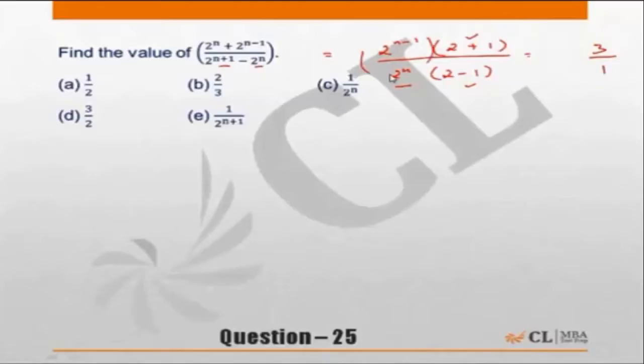If you just look at this particular portion, this is nothing but 1 by 2, which is equal to 3 by 2. So the answer has to be choice d. Simple way, but some of us tend to get confused the moment we see exponents.